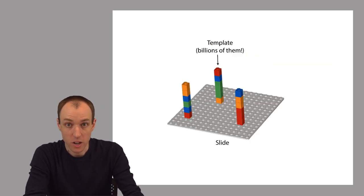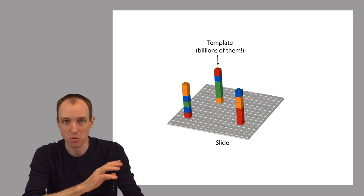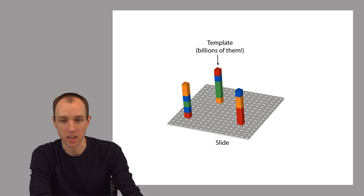So here is a Lego version of what we just saw. This is this Lego slide in gray, and there are three template strands. Even though we see only a few templates in this diagram, there are many, many templates attached to this slide. The slide is very big, and you should imagine millions or billions of these template strands scattered across it. The important part is what we do next.